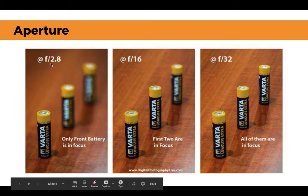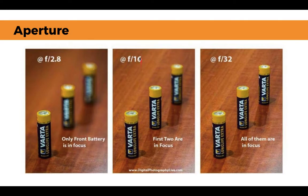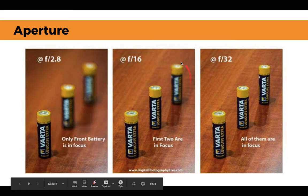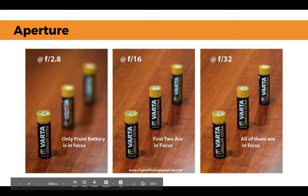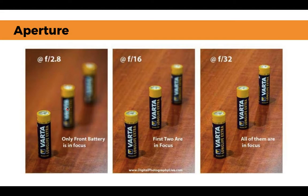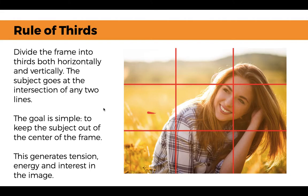At f-2.8, we can see one lone battery with everything behind it pretty blurry. At f-16, two are in focus but the third is not. At a really high f-stop like f-32, all three are in focus. What's very trending right now is to have a narrow depth of field, where we don't really see the fine details in the background — we obviously know these are batteries, but we don't see those details clearly.